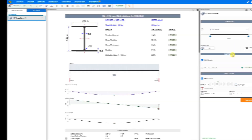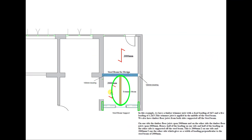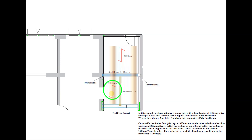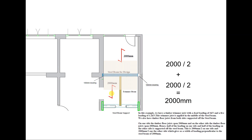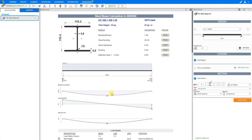Next we'll take a look at our loading inputs. In this example, we have a timber trimmer joist with a dead loading of 1 kN and a live loading of 1.2 kN, applied in the middle of the steel beam section. We also have timber floor joists from both sides supported off the steel beam — 2000 mm on one side and 2000 mm on the other side — giving a width of loading perpendicular to the steel beam of 2000 mm. Let's see how to enter this into the Price-A-Job calculator.